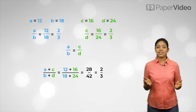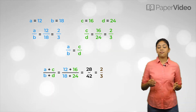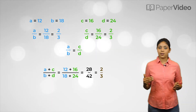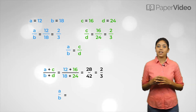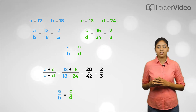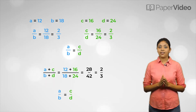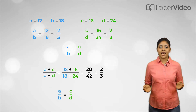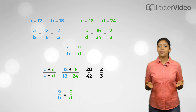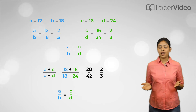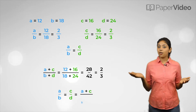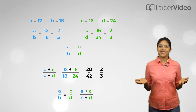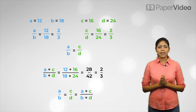From this we can say that if we have two equal ratios, a upon b equal to c upon d, then both of them are also equal to the ratio a plus c upon b plus d. But is this always true? Let us find out.